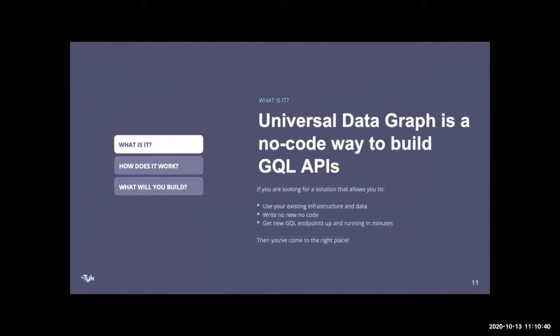Tyk's UDG, or Universal Data Graph, is a no-code tool that allows you to build fully functional GraphQL endpoints using existing REST and GraphQL services. As we expand the offering — and we're hoping for community involvement and feedback — we plan to add direct database access and support for other data streams like Kafka. Anywhere you can access data, we're hoping to plug that in to UDG, and what you'll end up with is a unified data graph that leverages services and endpoints that already exist.